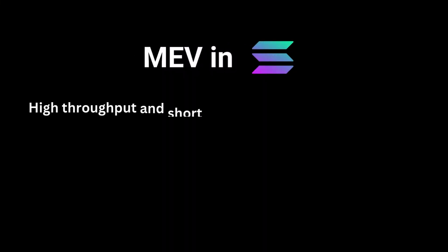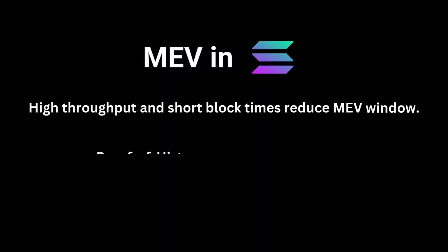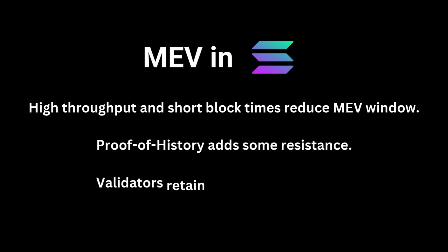Solana's high throughput and short block times reduce the window for MEV exploitation, but not entirely. Its Proof-of-History mechanism organizes transactions based on time, creating some resistance. However, validators still have discretion over transaction ordering, leaving room for MEV strategies.